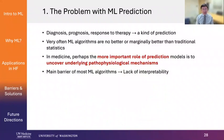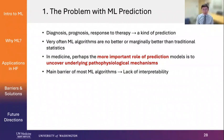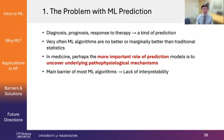First, the problem with machine learning prediction. Whether you are using machine learning for diagnosis, prognosis, or predicting response to therapies, it's all a kind of prediction. As I showed with the 30-day readmission example, machine learning is very often no better or only marginally better than traditional statistics in making predictions alone. More importantly, in medicine — unlike Netflix — the more important role of prediction is perhaps not actually predicting, but to uncover underlying pathophysiological mechanisms of underlying diseases. And one main barrier of most machine learning algorithms to date is a lack of interpretability — machine learning algorithms have often been viewed as black boxes, and you can't really know how they're making decisions.